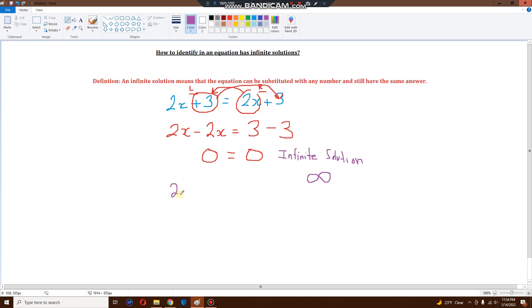If x equals 1, for example, if x is 1 and I put the other side also x is 1, well, guess what? If I solve this out, 2 times 1 is 2 plus 3 is 5. 2 times 1 is 2 plus 3 is 5. I end up with the same answers. You see that?